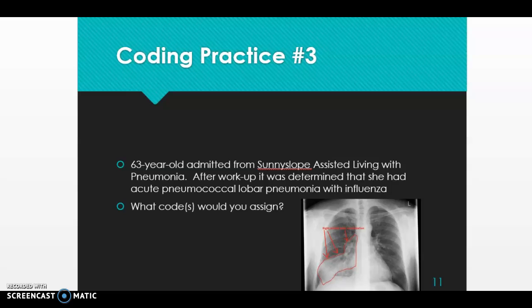We'll start by going to P for pneumonia in the index. Sometimes documentation doesn't specify the type, and you'd code unspecified pneumonia — J18.9. But here our documentation says acute pneumococcal lobar pneumonia, so we go to lobar on page 255, then indent down to pneumococcal, which gives us J13. Now let's flip to the tabular to J13.